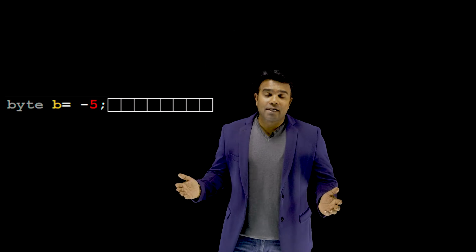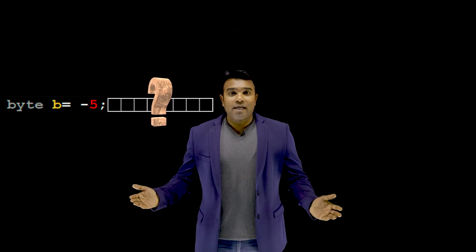If I create a byte type variable B and initialize it to 5, this is what happens internally in the memory device. However, if I create a byte type variable B and initialize it to minus 5, then what happens inside the memory device? How is it that a negative number is stored inside the memory device?